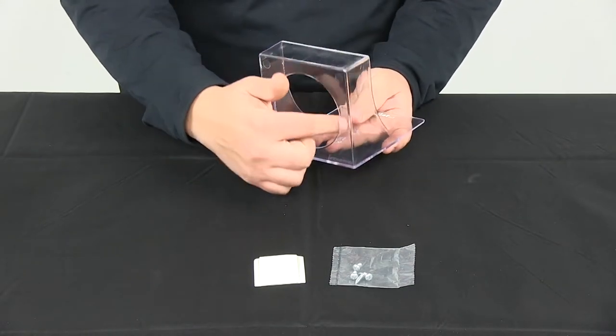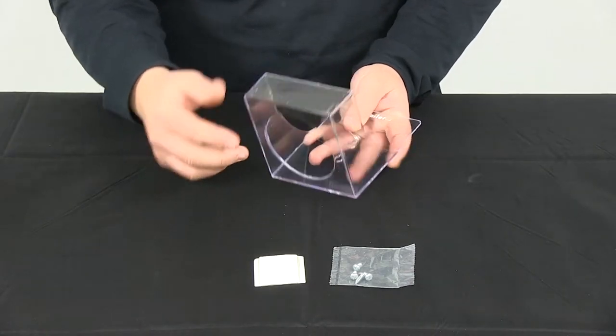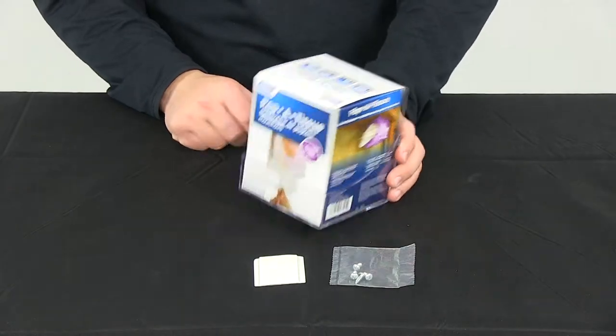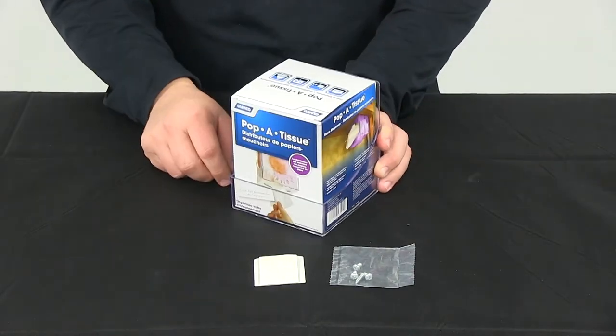You can see the cutout that it has here that's going to allow you to grab the tissue and pull it out. So if this was our tissue box it would just sit right in there for a nice snug fit and then you'd be able to pull your tissues out as necessary.